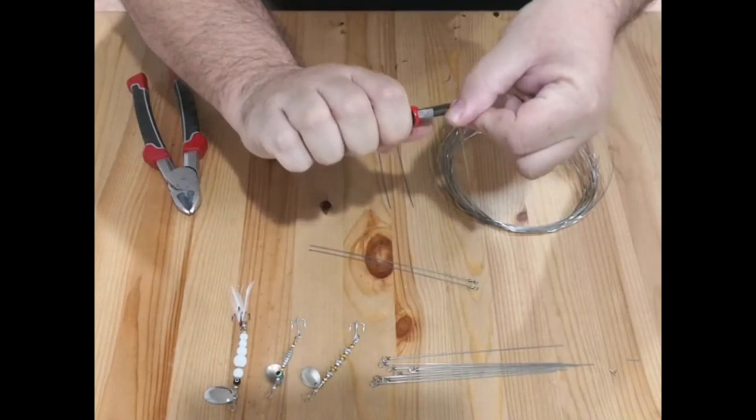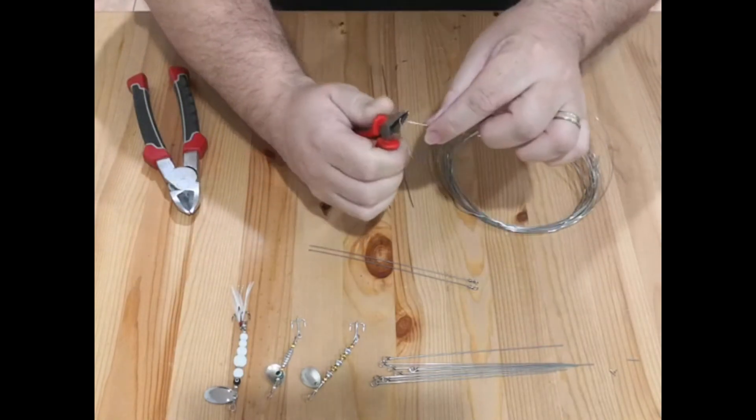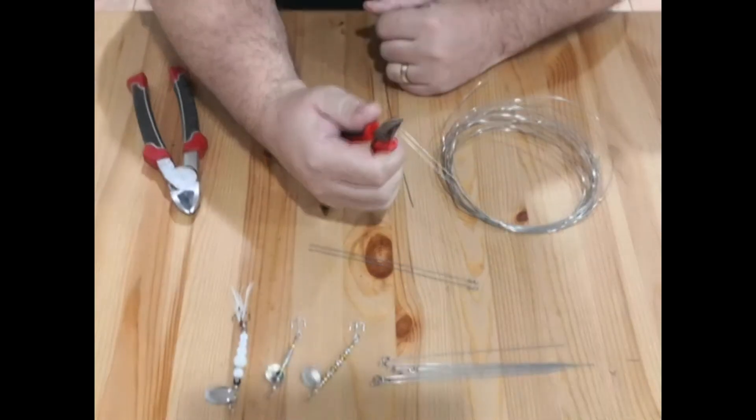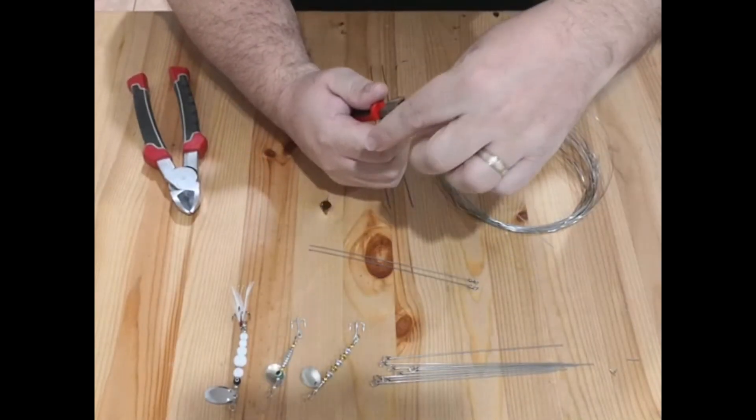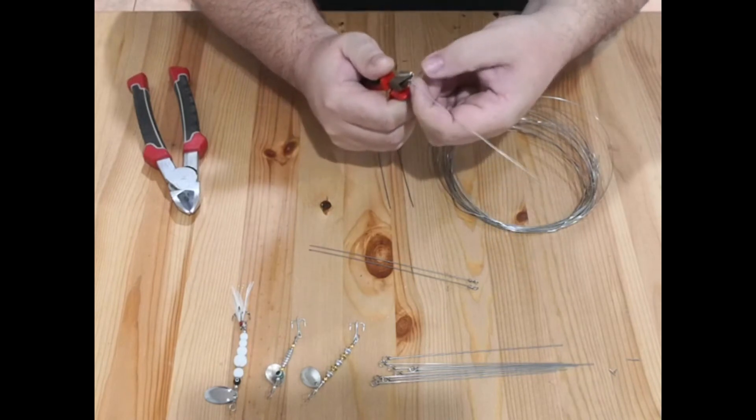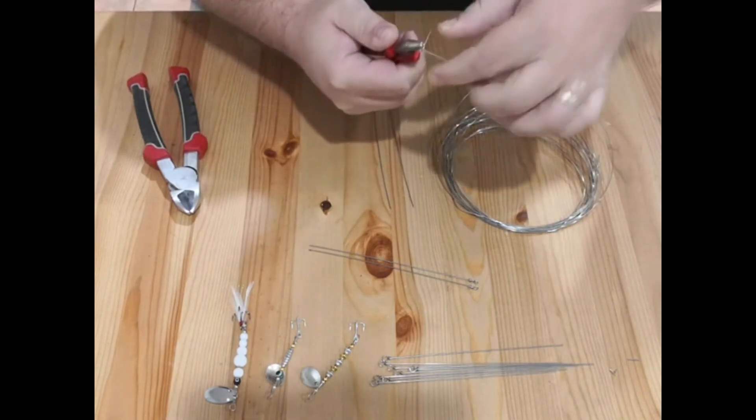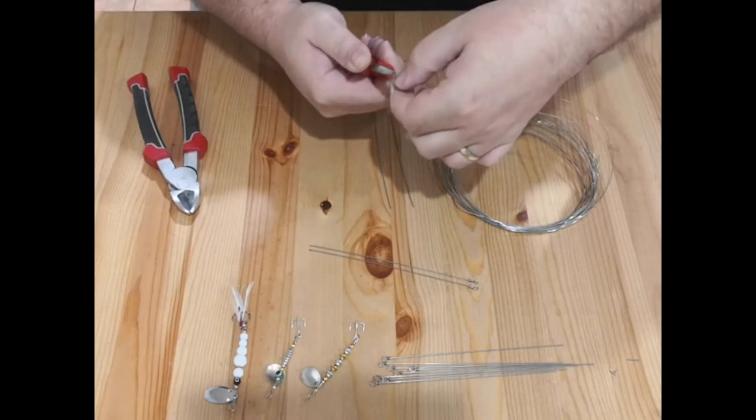All we then do is we just work around that round end. When you get to about the halfway mark, sort of straighten it up just so you've got a nice even eyelet. And then bring it all the way around, just like so. All we have to do then is just wrap this tail or tag around the main wire a couple of times.